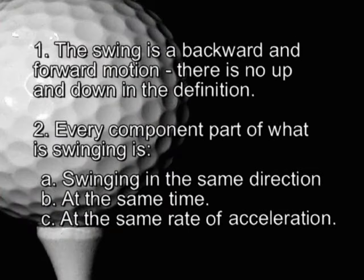The swing is a backward and forward motion. There is no up and there is no down in the definition. Every component part of the swing moves in the same direction at the same time and at the same rate of acceleration.